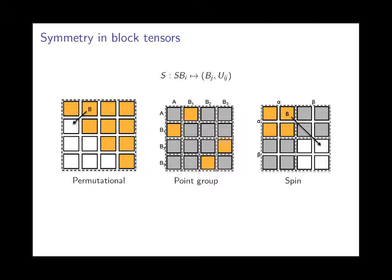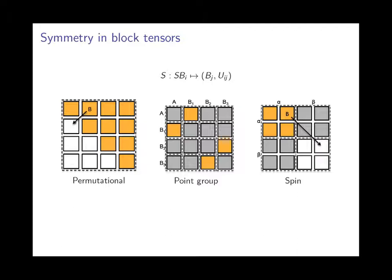Let me talk about symmetry. Symmetry is implemented as symmetry relations between blocks. Right now we have three types of symmetry: permutational, point group, and spin symmetry, which are found in quantum chemistry calculations. The library also has a mechanism to add new symmetry types, so if a new application requires a different kind of symmetry, it would be straightforward to implement.